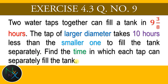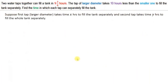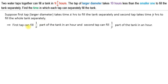We have to find the time taken by tap one and tap two. Suppose the first tap, which has larger diameter, takes X hours to fill the tank separately, and the second tap takes Y hours to fill the tank separately. So the first tap can fill one-X part of the tank in an hour, and the second tap can fill one-Y part of the tank in an hour.